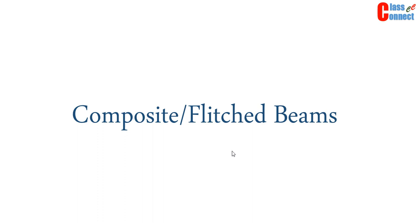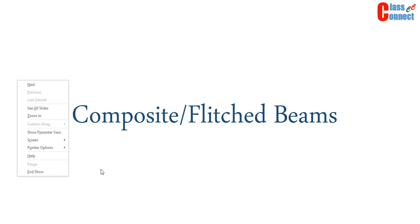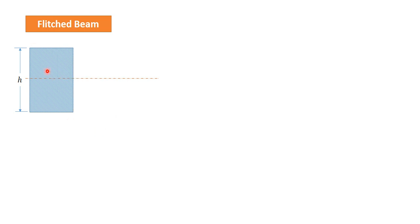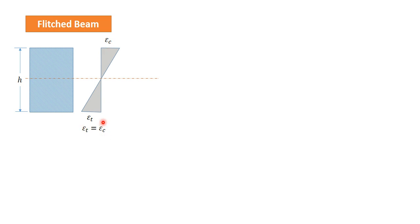Today we will be discussing composite or flitched beams. Consider a beam of rectangular cross-section where the neutral axis passes through the midpoint, that is through the centroid (CG). The strain distribution will be zero at the neutral axis, maximum at the top, and minimum at the bottom. If a downward transverse load is applied, the beam will sag and the upper fibers will be under compression while the lower fibers will be under tension.